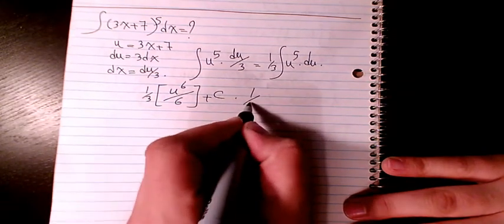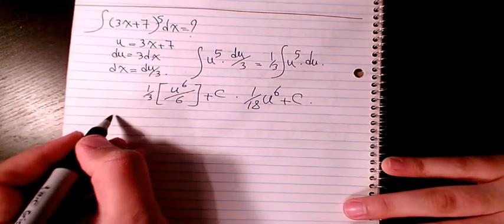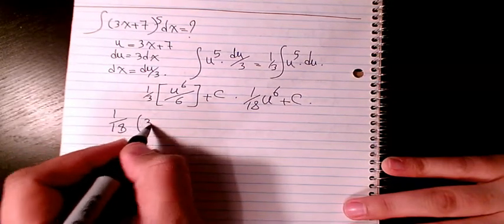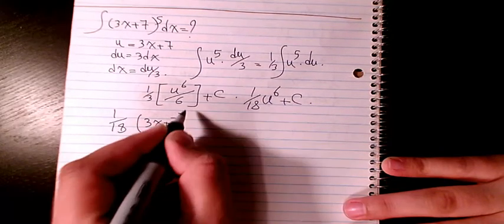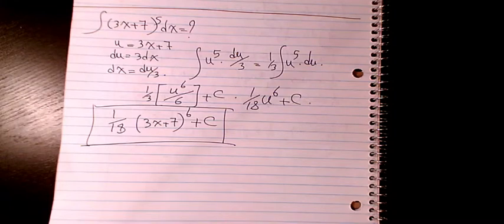So it's going to be 1 over 18 u to the power of 6 plus c, which is 1 over 18 times 3x plus 7 to the power of 6 plus c. This is the final answer to this question.